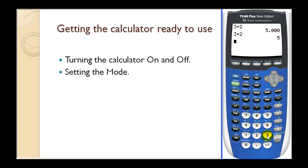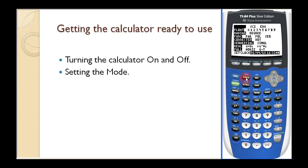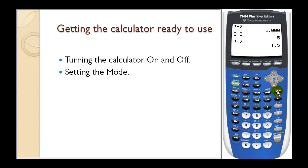So if you go back to mode and leave it on float, press down, enter, and then quit with second mode. Now if I press two plus three, it won't have extra decimal places and will only include decimal places when needed. For example, if I press three divided by two, it will return 1.5. There are a lot of other settings in mode, but for right now we're only dealing with expressions. If I want to clear the home screen, I press clear, and that will position the cursor in the top left corner.